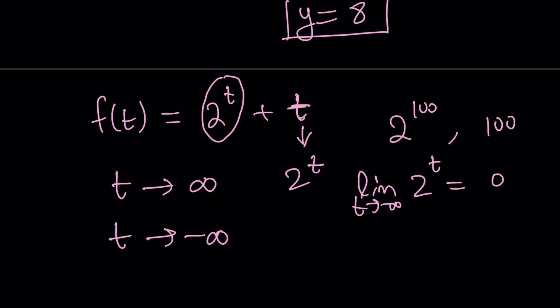As t approaches negative infinity, this is going to approach positive infinity. And the denominator is going to approach infinity. So 1 over infinity is just going to approach 0. Great. So our function then, the exponential term is going to be super-duper unimportant. And then we're going to end up with something that is polynomial.